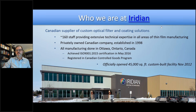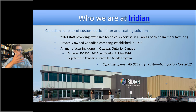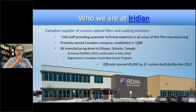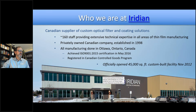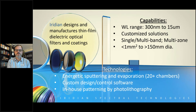Iridian has been around since 1998. We're a Canadian company and we have about 170 folks actively involved in the manufacture and production of these optical filters. All our manufacturing is done at our building in Ottawa, Ontario, Canada. We are ISO 9001:2015 certified since May 2016 and we're also registered as part of the Canadian Controlled Goods Program.